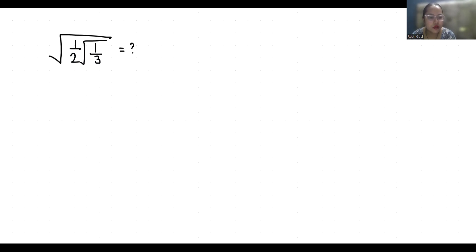I am going to take it equals to m, so under square root 1 by 2 times under root 1 by 3. I'm going to simplify this under root 1 by 3. You can write under root 1 by under root 3.